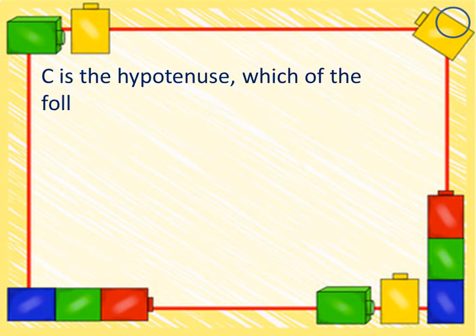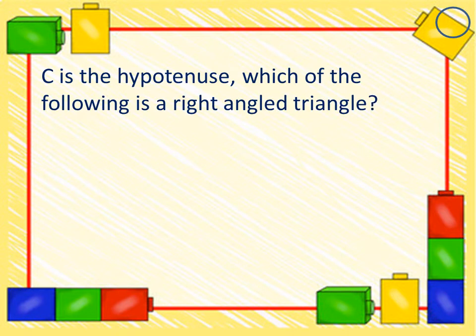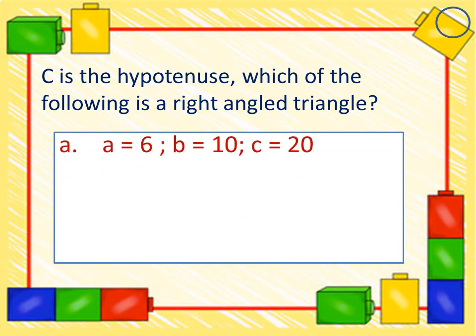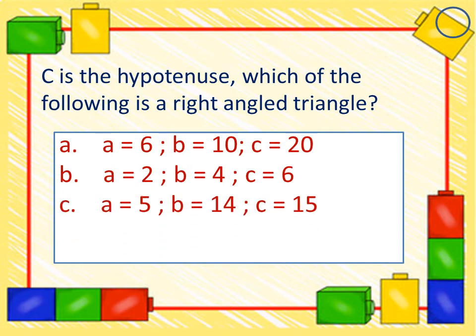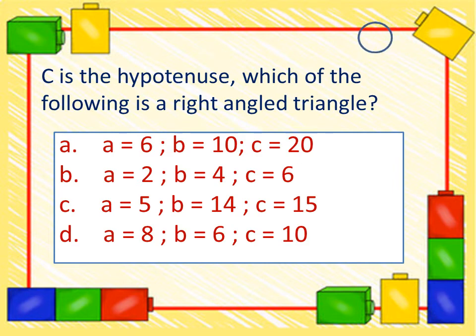How about this problem? C is the hypotenuse. Which of the following is a right-angled triangle? From the choices A, B, C and D. In A, a=6, b=10, c=20. B, a=2, b=4, c=6. C, a=5, b=14, c=15. And D, a=8, b=6, c=10. What is your answer? Which of the following has the perfect right-angled triangle? Answer A, B, C or D. The final answer is, oh, it's D. That is the perfect right-angled triangle.